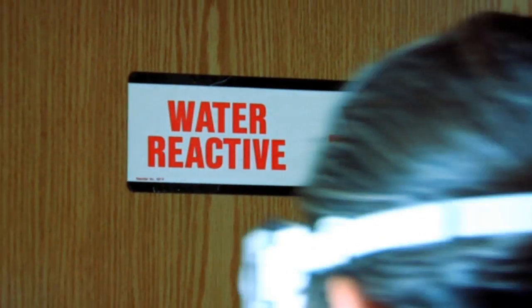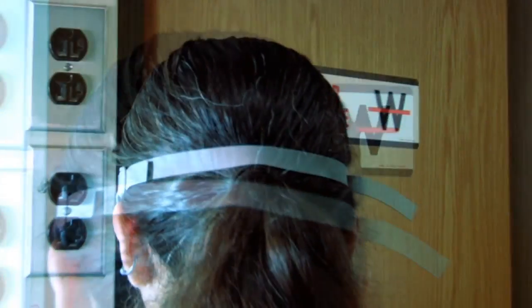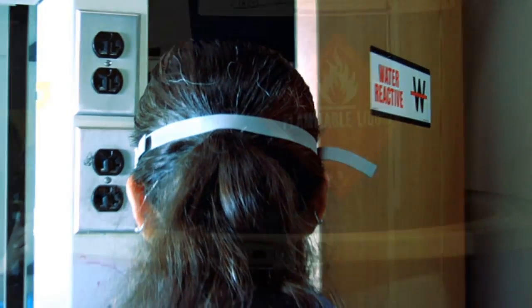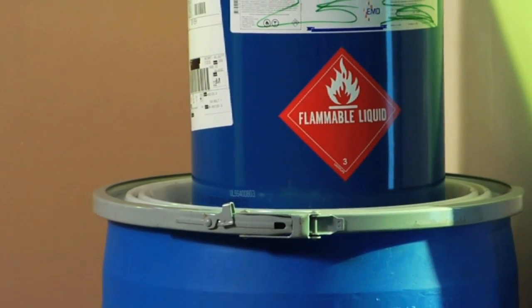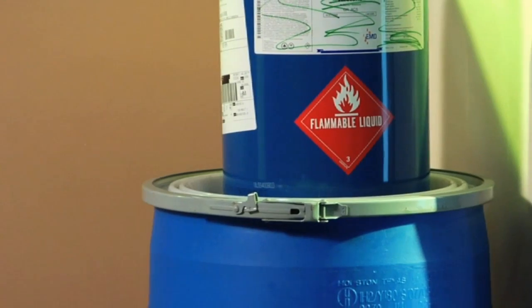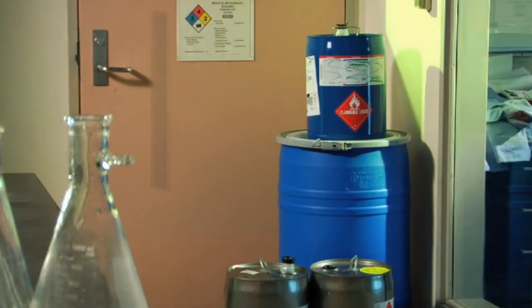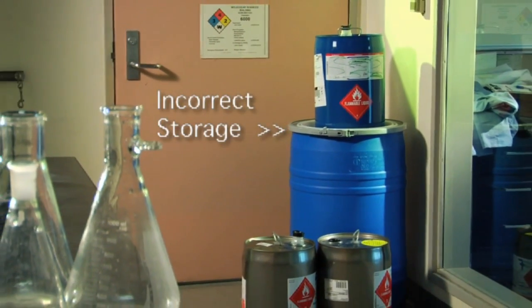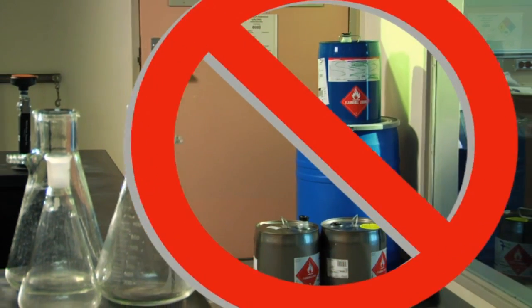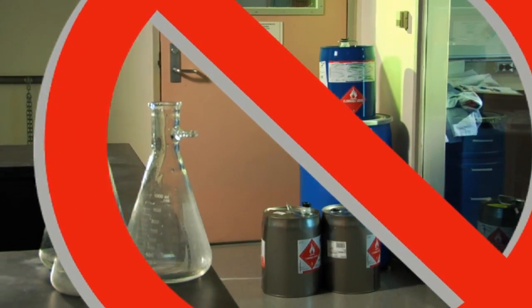Store water-reactive and pyrophoric chemicals separately in approved and labeled cabinets. At any given time, no more than 10 gallons of flammable and or combustible liquids may be kept outside of the storage cabinets in laboratory areas. The vapor content in flammable material containers may still pose a potential hazard. Therefore, properly dispose of all empty or unnecessary containers in the lab.